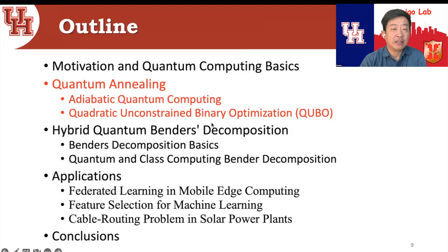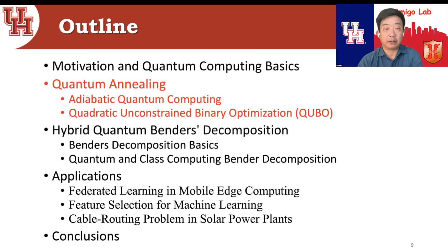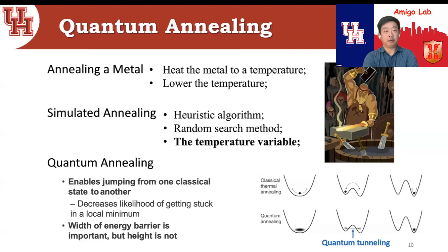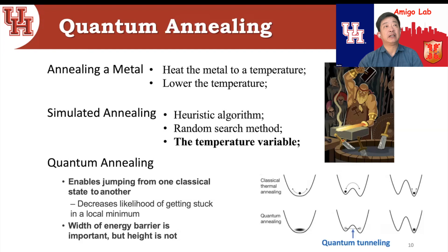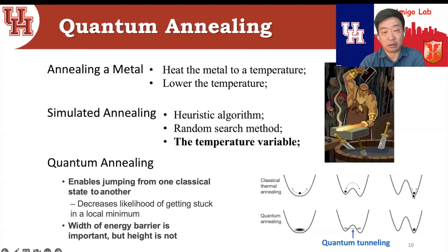For quantum annealing basics, we start from the algebraic quantum computing mathematical model and the QUBO algorithm. In real life, annealing means heating metal to a high temperature and then cooling it so it settles into a better shape. For simulated annealing, if you fall into a local optimum, you heat it up, go uphill, and then come back down hoping to fall into a better local optimum. This is the classical simulated annealing algorithm.